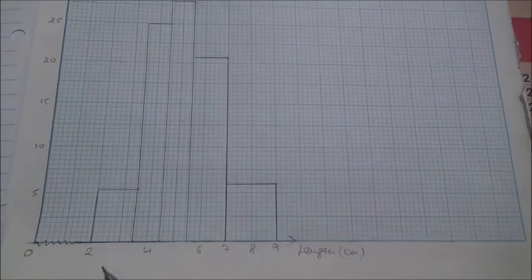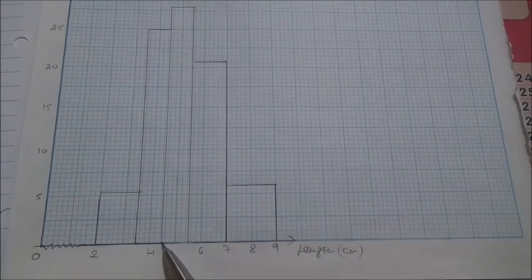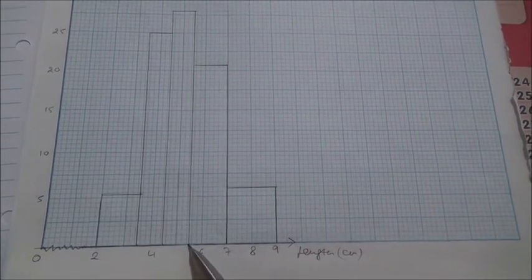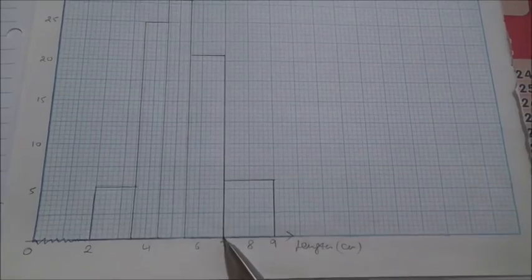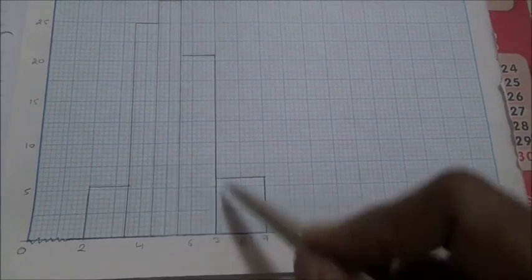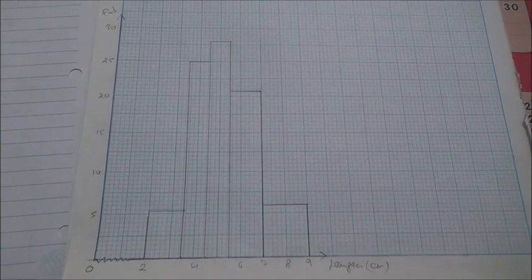So 2 to 3.5, 3.5 to 4.5, 4.5 to 5.5, 5.5 to 7, 7 to 9. And these are the different frequency density values that we found from our calculation. Here we are for question number 2.